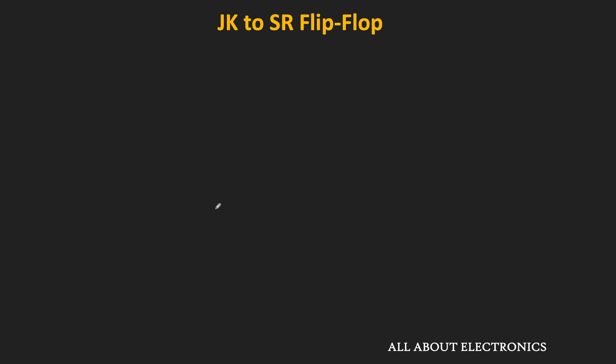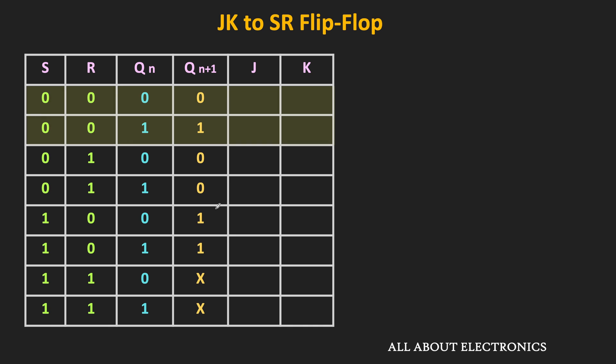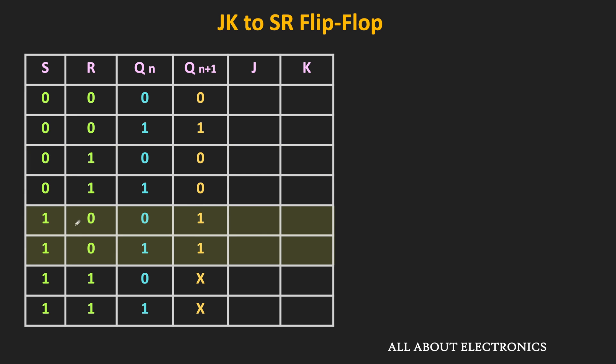Since the SR flip-flop is our required flip-flop, let us first write down its truth table. For the SR flip-flop, when both S and R inputs are 0, the flip-flop retains its current state. When S is 0 and R is 1, the flip-flop resets to 0. When S is 1 and R is 0, the flip-flop sets to 1. When both inputs are 1, the output is indeterminate — we cannot predict the next state.